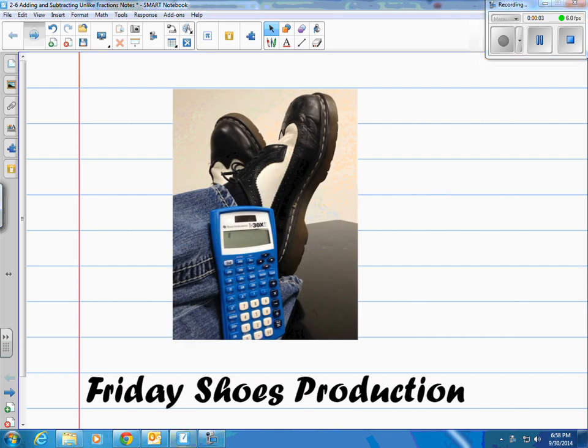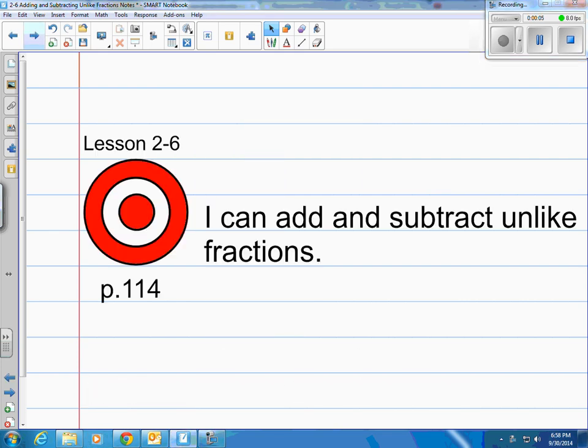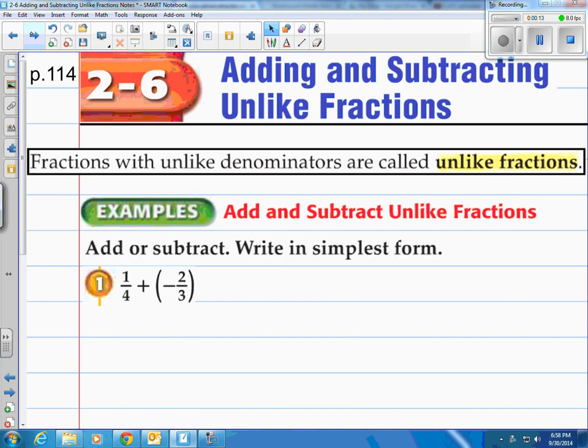This is a Friday Shoes production. This is lesson 2-6 in our book on page 114. The target is I can add and subtract unlike fractions. Unlike fractions are fractions that do not have the same denominator. The bottom for the fractions are different.